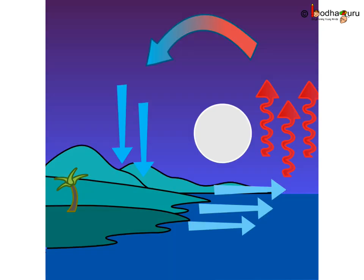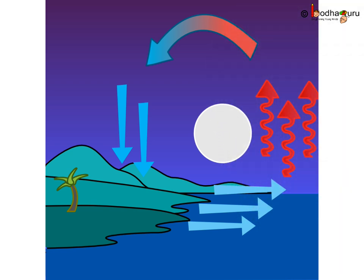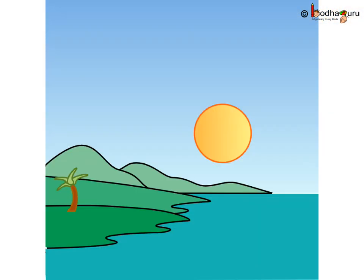Let us see the nighttime now. During the night, the land cools faster, so the air above the sea is warmer and rises up. The cool air from the land blows towards the sea. This is called the land breeze — the movement of air from the land towards the sea. We conclude that it is the heat of the sun that helps the movement of air and causes the sea and land breeze. Places near the sea have two kinds of breezes: the sea breeze during the daytime and the land breeze during the nighttime.